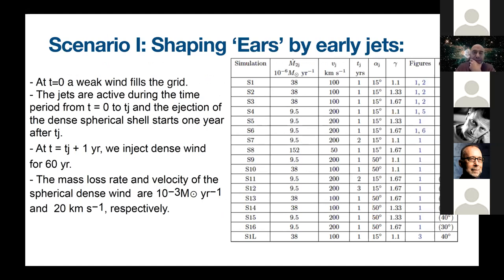The first model which is the shaping is by early jets. We have at T0 a weak wind fills the grid. Then the jets are active for Tj time, as you can see here in the table. These are the cases that we have simulated in our paper. Alpha j is the half opening angle of the jet and gamma is the adiabatic index. M2j is the total mass loss rate of the two jets. At T equals Tj plus one, this means after one year after the jet, we inject the dense wind for 60 years. The mass loss rate and velocity of the spherical dense wind are 10 to the minus three solar mass per year and the velocity is 20 kilometers per second.